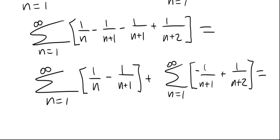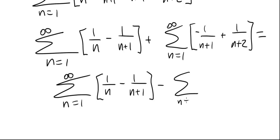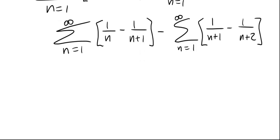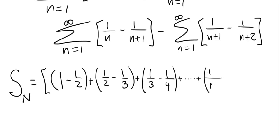Let's rewrite it once more and then we'll be able to finish the problem. We are now ready to find the formula for S sub N. For the first telescoping series, S sub N equals 1 minus 1/2, plus 1/2 minus 1/3, plus 1/3 minus 1/4, continuing until we have 1 over N minus 1 over N plus 1. Almost all middle terms cancel, leaving 1 minus 1 over N plus 1.